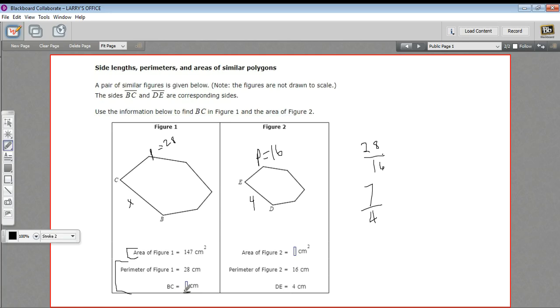If we want to solve for this side here of the bigger polygon, we'd set up a proportion with 7 fourths on one side and X over 4 on the other side. In a proportion, you have to have things in the same order. I've got big polygon, little polygon, big polygon, little polygon.